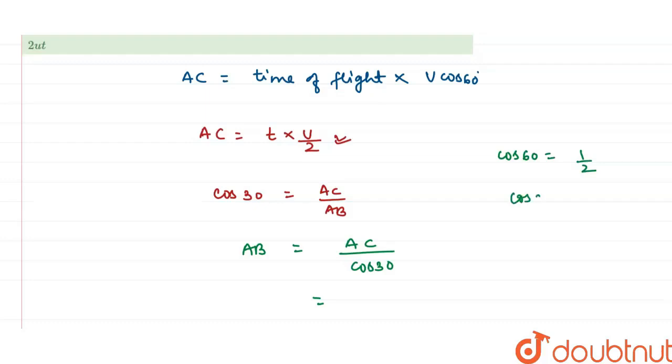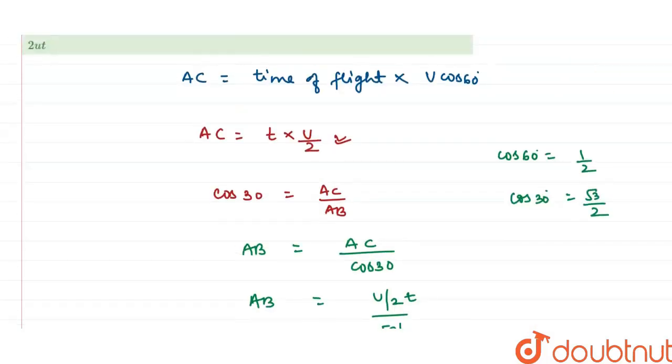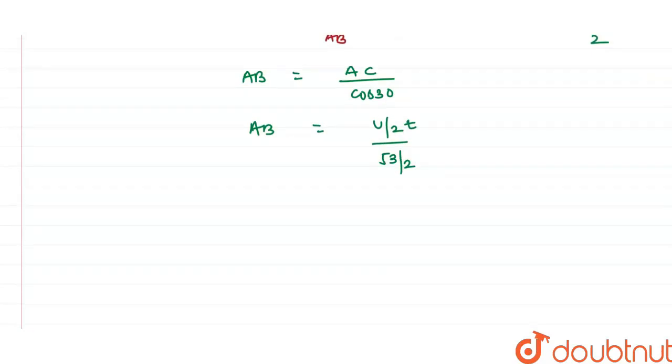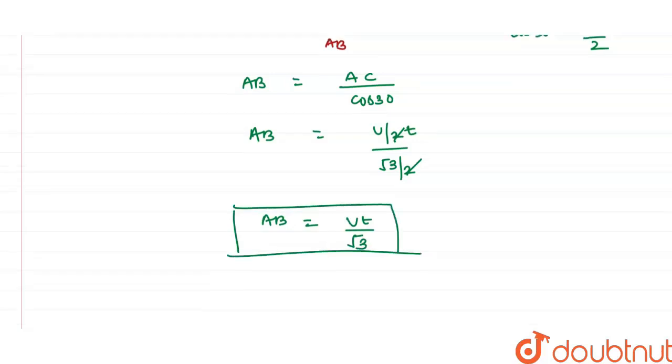Putting all the values, we will have the value of AB equals to AC is ut by 2 upon cos 30 is root 3 by 2. This value is ut upon 2, so 2 cancels out. So the value of AB will be coming out to be ut upon root 3.